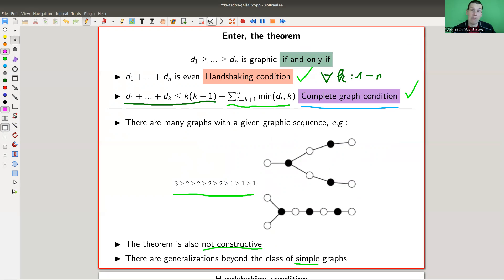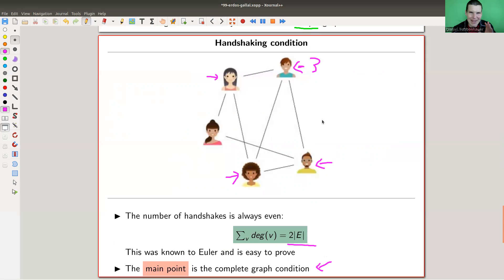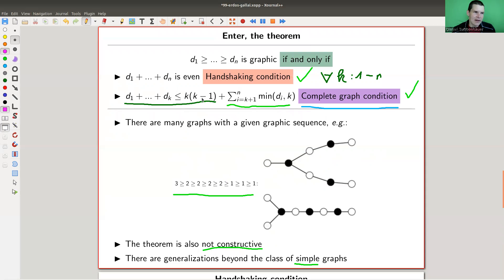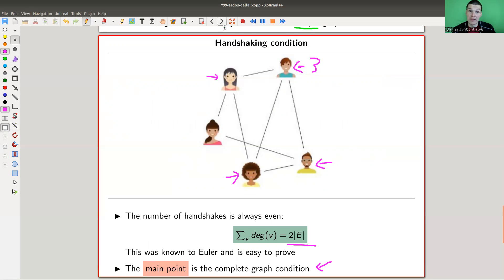So that is kind of easy. And you get it almost immediately. If you would have to think about the theorem yourself, you come up with this very quickly. The other one is a little bit more subtle, and actually really the main point, in particular, that you can really now construct using this condition, you can really construct the corresponding simple graphs.